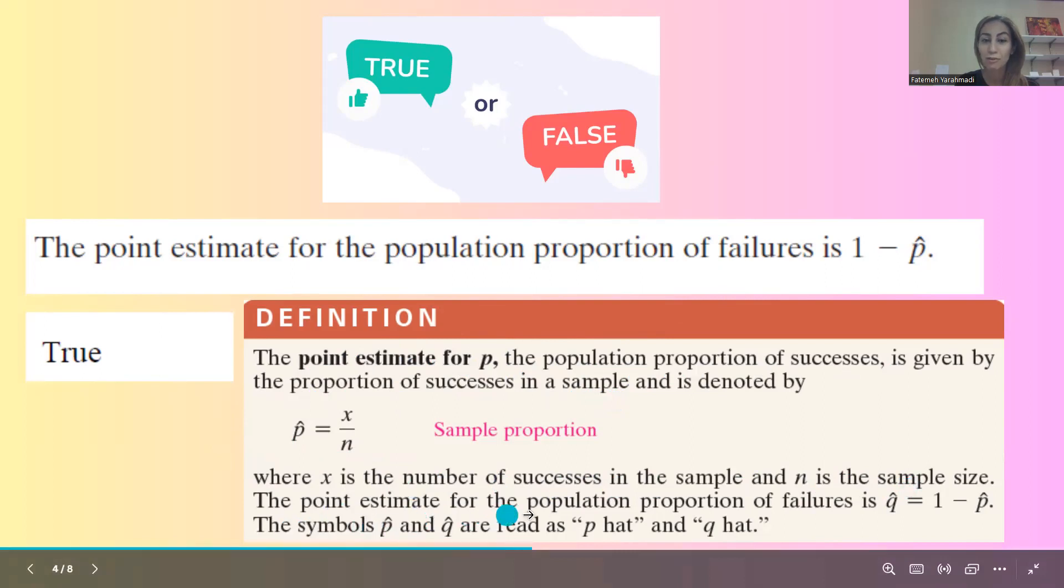The point estimate for the population proportion of failure is denoted by q hat and it's equal to 1 minus p hat.